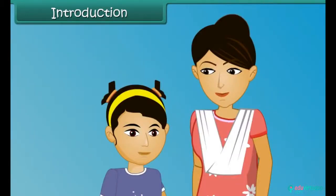Ananya's mother tells her that dark clothes are not right for summers. Ananya wants to know more about different types of clothes. Her mother tells her all about clothes when they reach home.